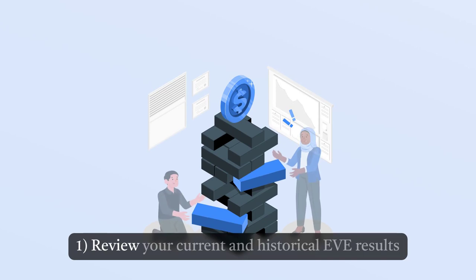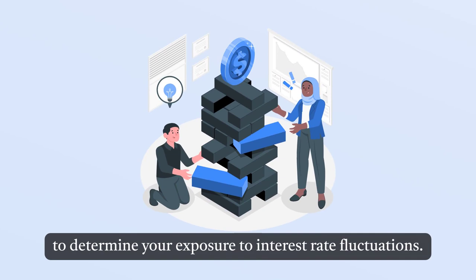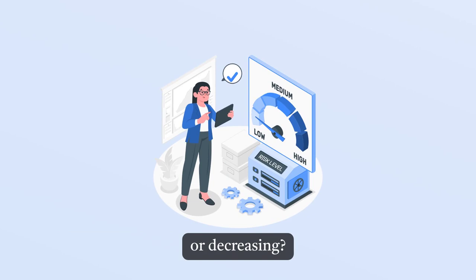Step 1: Review your current and historical EVE results to determine your exposure to interest rate fluctuations. Is your institution exposed to interest rates increasing or decreasing?